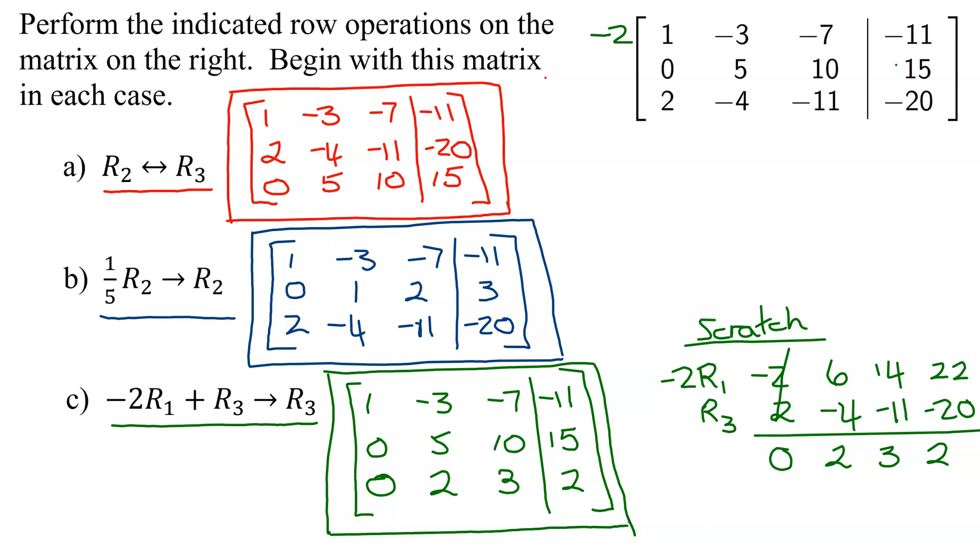And one thing before I go, I want to point out that these are the three different types of row operations that we can do to your augmented matrix. You can swap rows, you can multiply a row by a number, and you can add rows together or multiples of a row to another row.